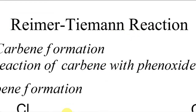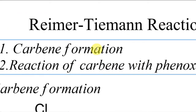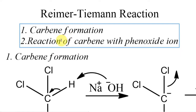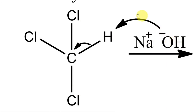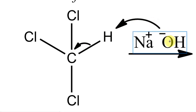The mechanism of this reaction has two parts: carbene formation, and then the reaction of that carbene with the phenoxide ion. Chloroform is reacting with NaOH; OH⁻ is the reacting species and picks up a proton from the chloroform molecule. This is shown through curved arrows — one arrow means a new bond forms between OH and H, and the other arrow means this particular bond is breaking.